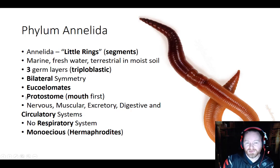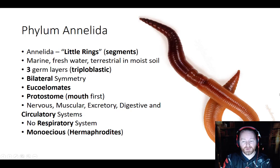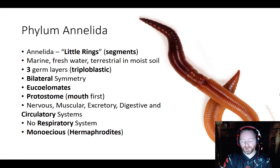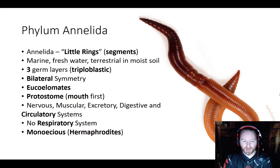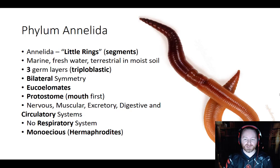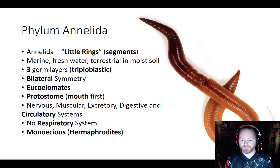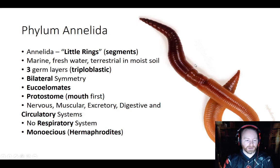Annelids are protostomes just like nematodes — their mouth forms first. With flatworms and cnidarians we don't see that; they don't qualify as protostomes or deuterostomes because they only have one opening — the mouth and the anus are the same. To be a protostome, the mouth has to form first and the anus second. We see that with nematodes, and the same thing — a complete one-way digestive tract — with annelids as well.